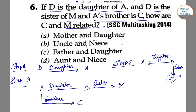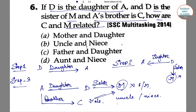Now we can find the relation between C and M. M's gender is unknown — M may be male or female — but we know C is male. Hence the relation between C and M can be that of uncle and niece, or uncle and nephew. Uncle and niece is one of the given options, so the right answer is option B: uncle and niece.